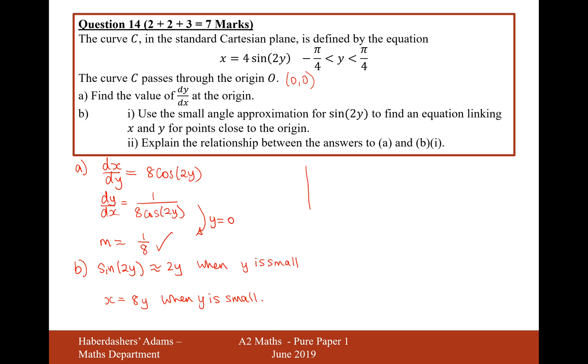Explain the relationship between your answer in part a and part b. Well, if you take x equals 8y and divide both sides by 8, then you're going to get y equals 1 over 8 x, where the gradient of this line is 1 over 8, which is the same as our differentiated gradient. So it does make sense, the two things have matched up.